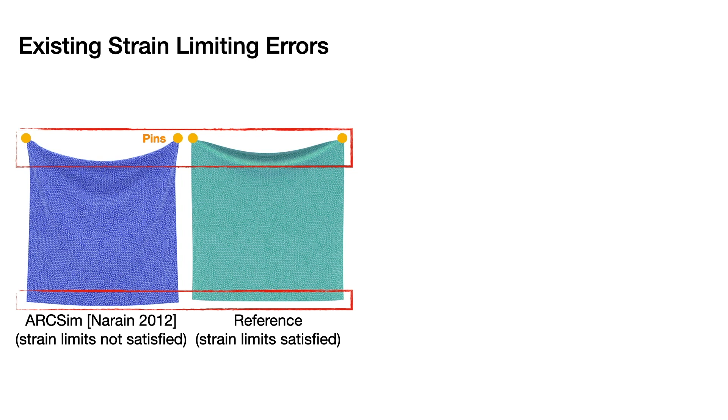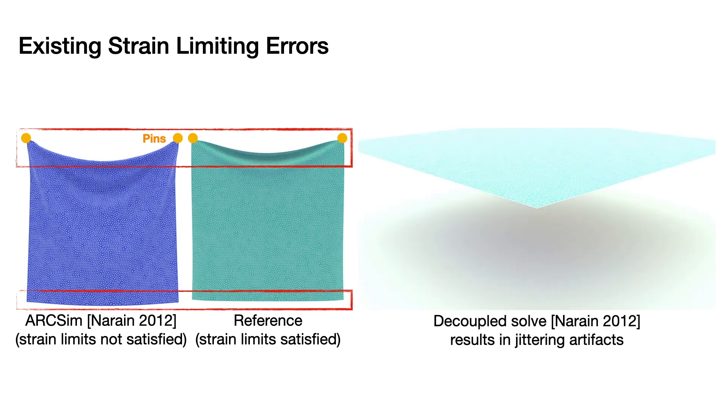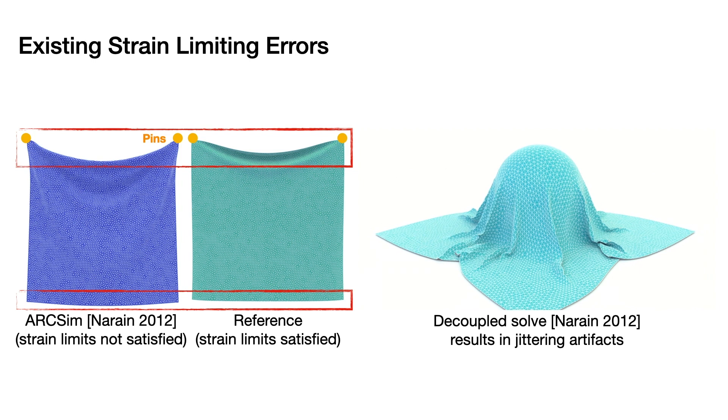At the same time, they also aren't able to accurately couple strain limits with other forces, resulting in errors that produce unacceptable artifacts like jittering.